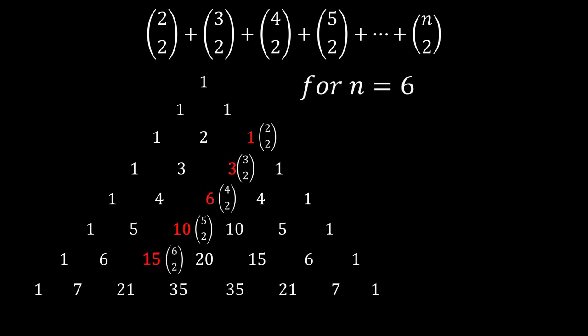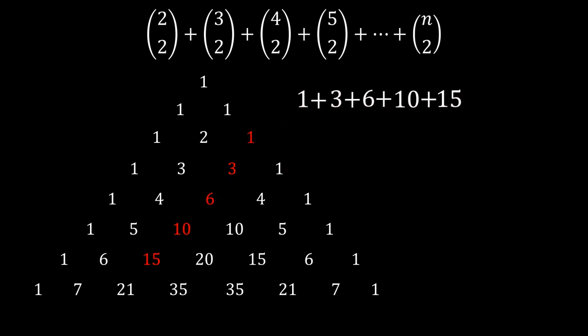So let's only consider the case when n equals 6 to see what is going on here. Let's just try adding these terms together, and we see that it equals 35. But notice an interesting pattern here: 35 is the number below and to the right of 15.